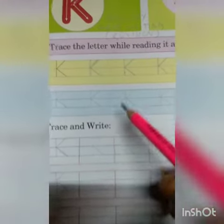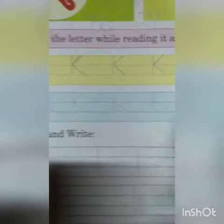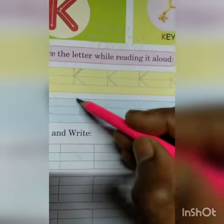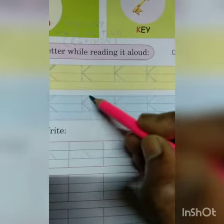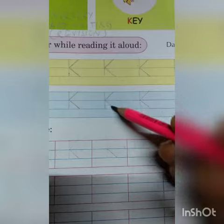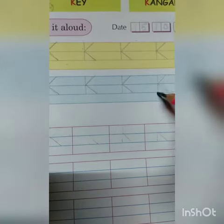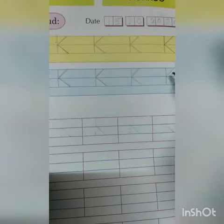Now, next line. K, K, K. K is for key, K is for kangaroo, K is for kite, K is for kettle, K is for king.